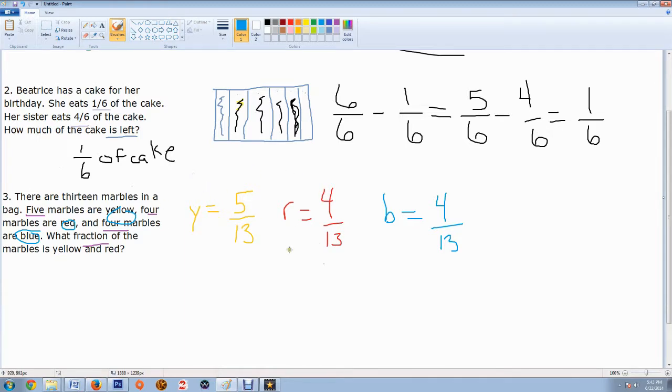We want to know what fraction of the marbles is yellow and red. So we're going to go ahead and we're going to just take the yellow. The yellow is 5 thirteenths, and the red is 4 thirteenths. We're going to add those up. The bottom doesn't change in addition, just like it doesn't change in subtraction. And 5 plus 4 is 9. So our answer would be 9 thirteenths of the marbles are yellow and red.